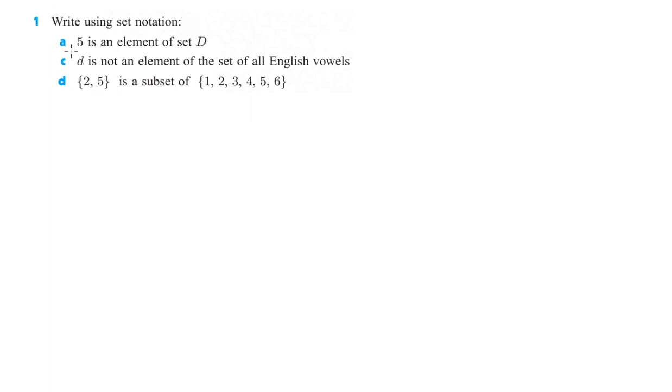first one to look at is number one, write using set notation. A, 5 is an element of set D. So for that, we do 5, and then the element symbol is the goofy looking E sideways like that, element of set D.